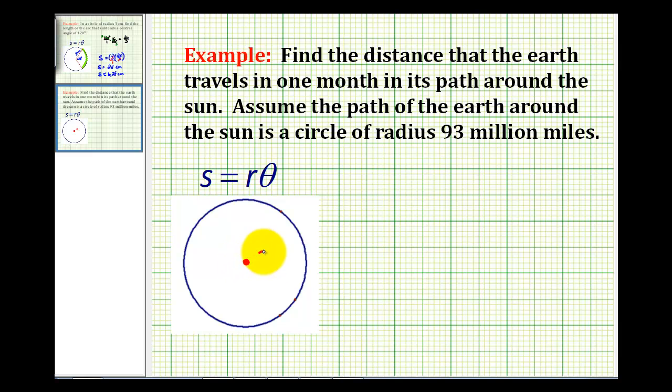So this point here would be the sun, and this point here would be the earth. And since it takes one full year for the earth to travel around the sun, in one month we'd have one twelfth of a revolution. So theta would be one twelfth of two pi radians.